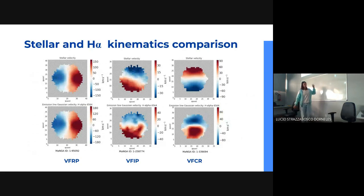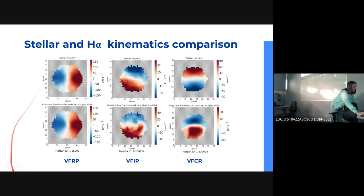About the kinematic classifications: first, we have the velocity field with regular pattern. I compare the stellar velocity field and the H-alpha velocity field. The regular pattern is where there is redshift in the stellar velocity field, there is also redshift in the H-alpha, and the same for blueshift.